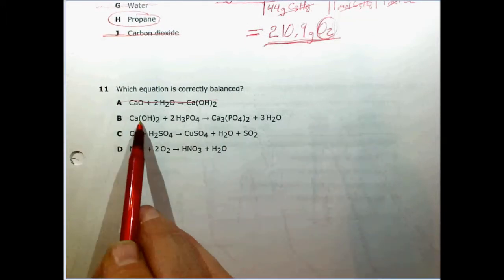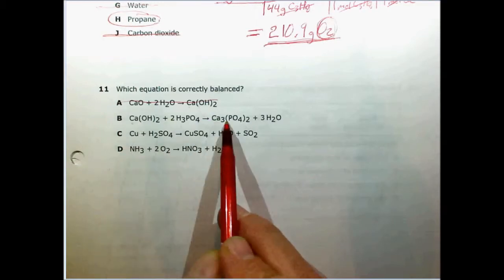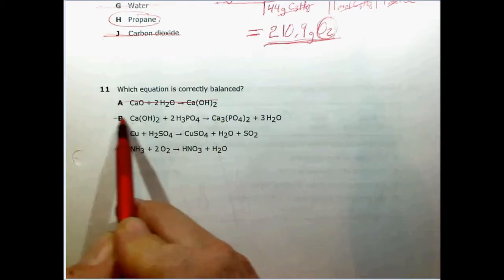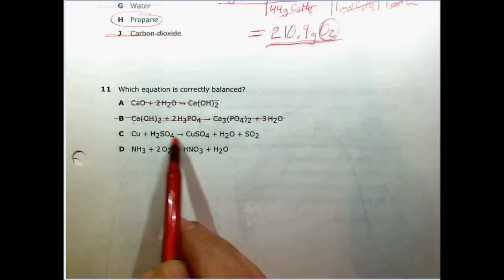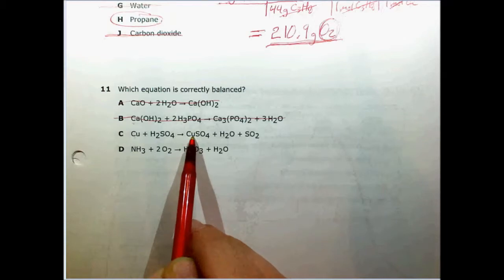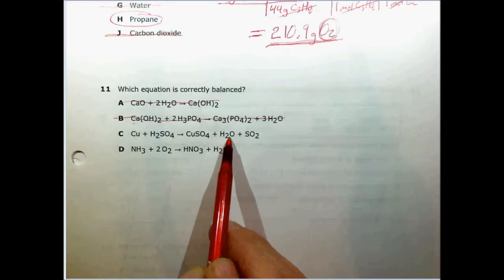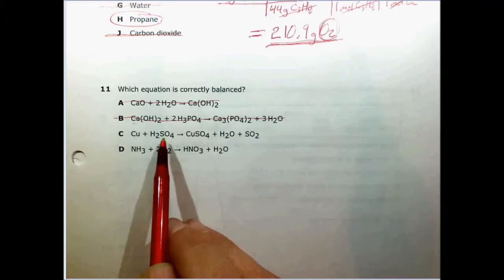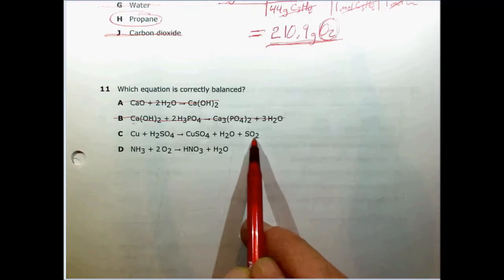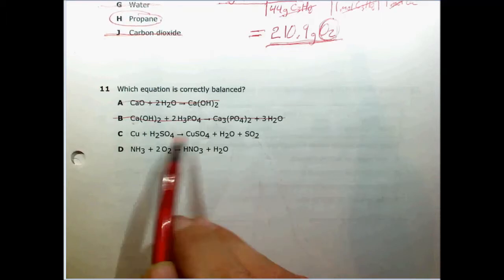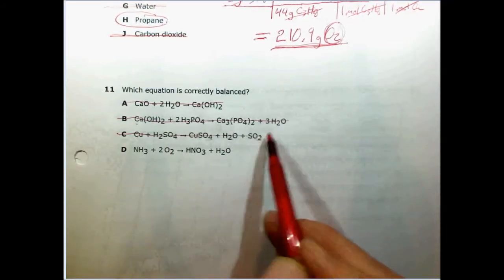If we move on to this one, we can see that we have one calcium atom on this side but we have three calcium atoms on this side, so immediately we can strike this. Here we have a copper atom on the left-hand side and one on the right-hand side, looking good so far. We have two hydrogens on this side and two on this side, still good, but we have four oxygens here and four plus two more over here, and we also have one sulfur, a sulfur and a sulfur here. So it can't be this one.